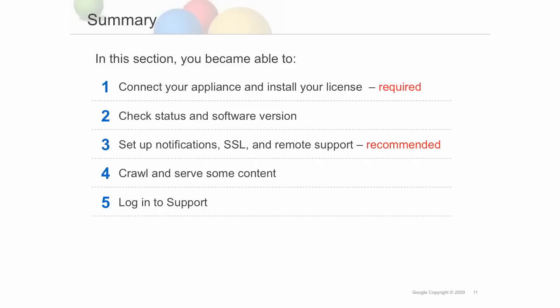In this module, you learned how to connect your appliance to the network, log into Admin Console and install your license, check your appliance status and software version, set up email notifications, SSL encryption, and remote support. You also learned to crawl and serve some content to verify connectivity, and log into the support portal to check on software updates and open tickets. The only required steps were connecting to the network and installing your license. It is also highly recommended that you set up remote support, update your software to the latest version, and crawl and serve some test content.